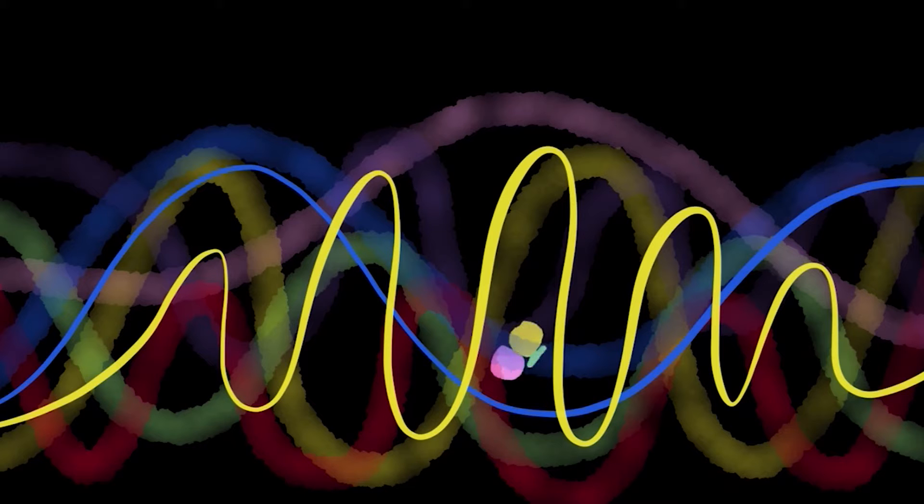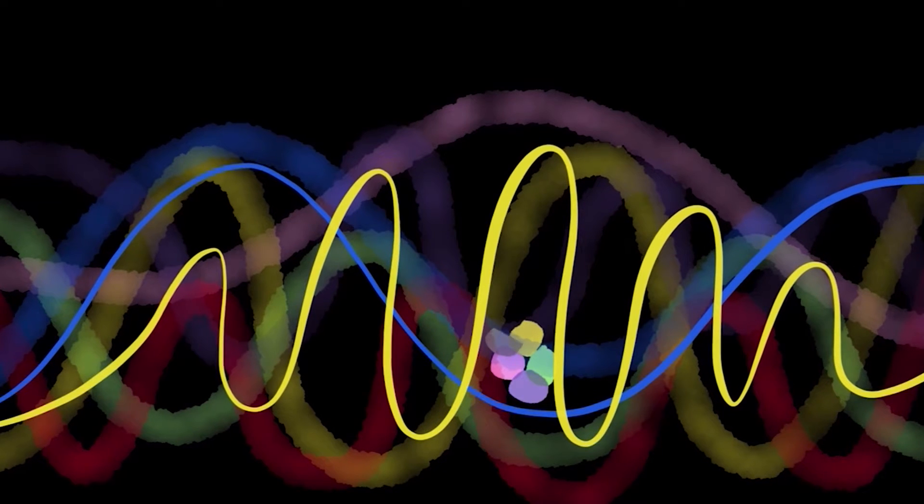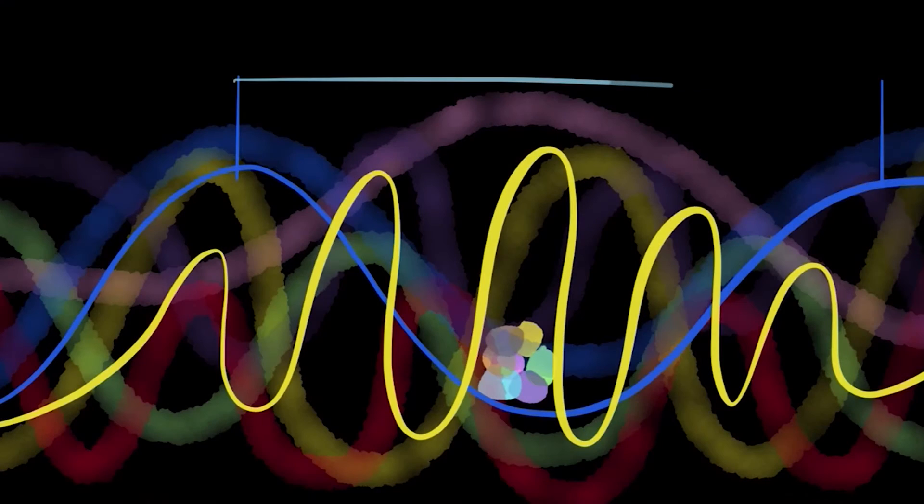If the object is much smaller than the wavelength, the wave will not see it. To see electrons, atoms and molecules we need very short wavelength, tenth of nanometer or less. But where can we get such a wave?